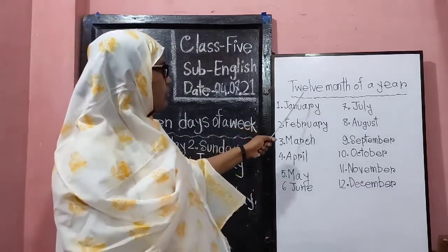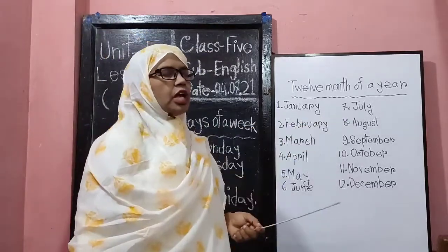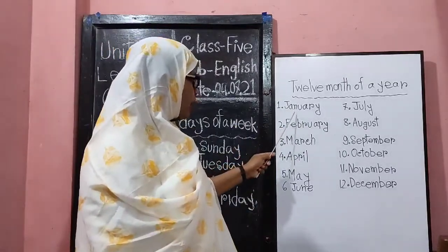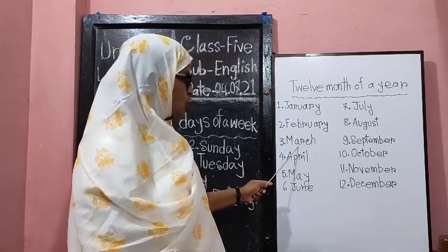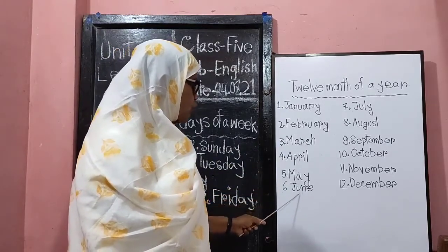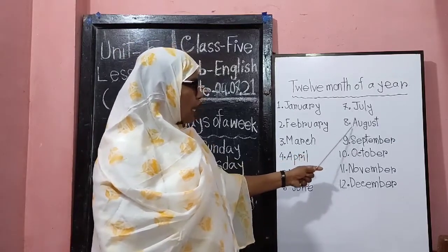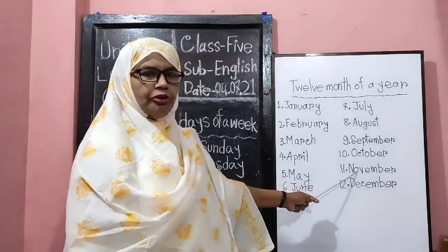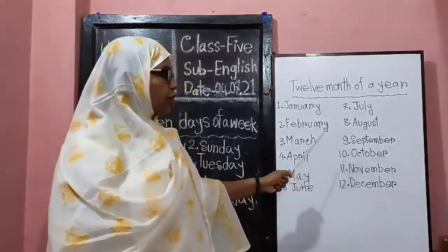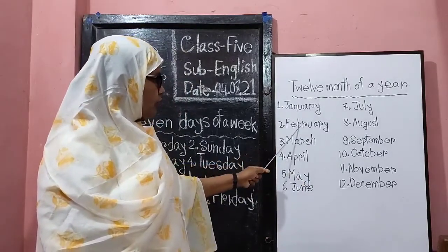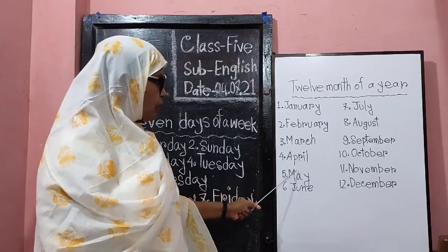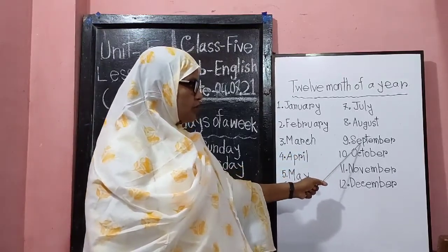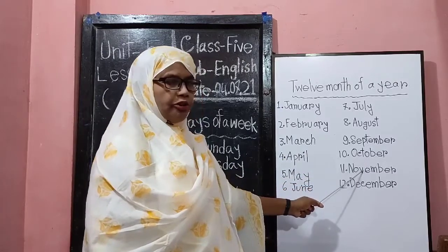Now, here, 12 months of a year. Again: January, February, March, April, May, June, July. Again: January, February, March, April, May, June, July, August, September, October, November, December.